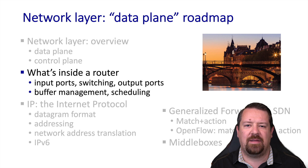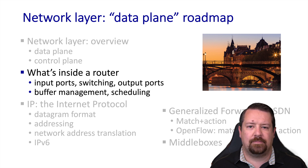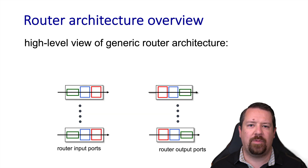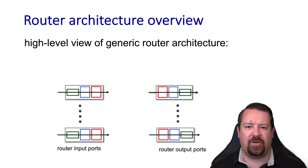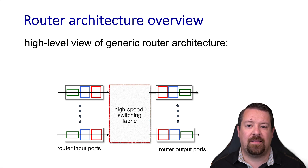In this video we get to start digging into the details of the network layer, specifically looking at how routers work. Routers are built of a number of components, including the input and output ports, their associated buffers, and the switching fabric that connects them. We will use this abstraction to discuss the functionality of routers. Packets proceed through the ports following the directions of the arrows, and there's a high-speed switching fabric connecting the input and output ports together.